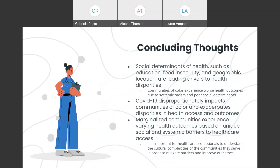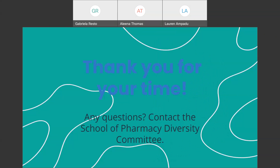To wrap up this presentation, we're going to touch upon some concluding thoughts and key points. Social determinants of health, such as education, food insecurity, and geographic location, are all leading drivers of health disparities. Communities of color experience worse health outcomes due to systemic racism and poor social determinants. COVID-19 disproportionately impacts communities of color and exacerbates disparities in health access and outcomes. Marginalized communities experience varying health outcomes based on unique social and systemic barriers to healthcare access. Overall, it's important for healthcare professionals to understand the cultural complexities of these communities in order to ultimately mitigate barriers and improve patient outcomes. Thank you so much for your time and viewing our presentation.